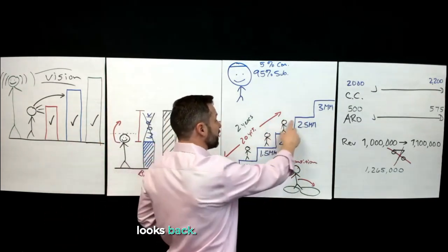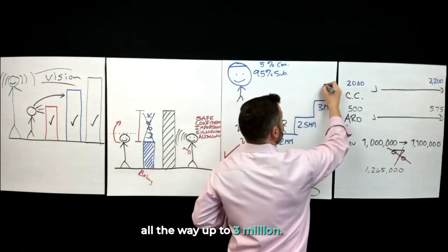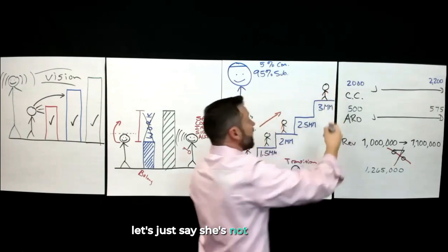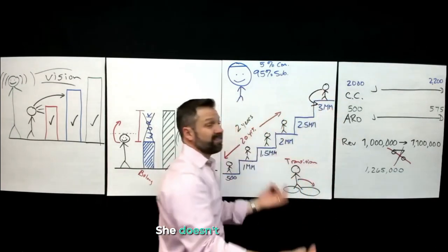And then all of a sudden she looks back, and while she might finally get to here, maybe she gets all the way up to $3 million. And let's just say she's not comfortable with $3 million. She's super feeling awkward about $3 million. She doesn't like $3 million.